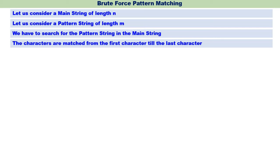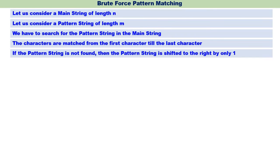The characters are matched from the first character till the last character. To begin with, the first character of the pattern string is matched with the first character of the main string, and we go from the first character to the last. If the pattern string is not found at a particular position, then the pattern string is shifted to the right by only one. Always, shifting to the right happens by only one.